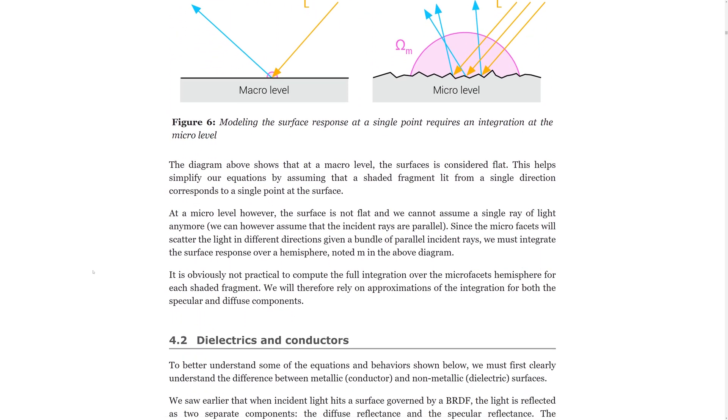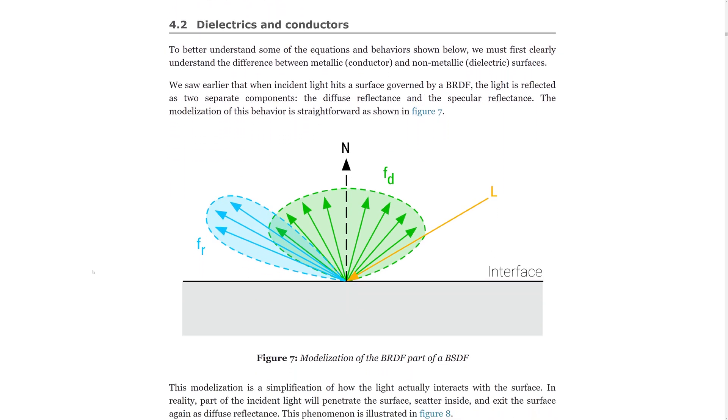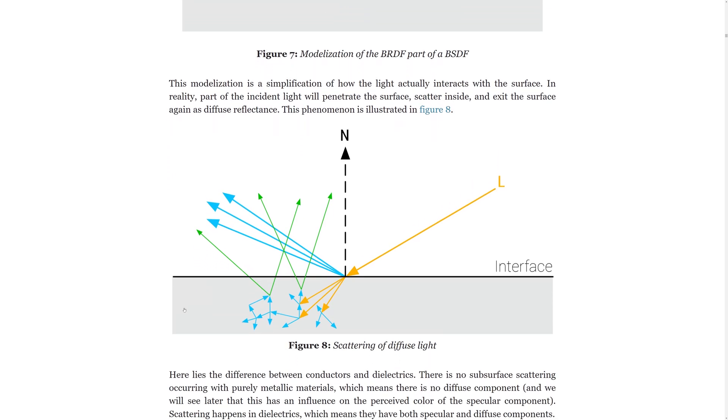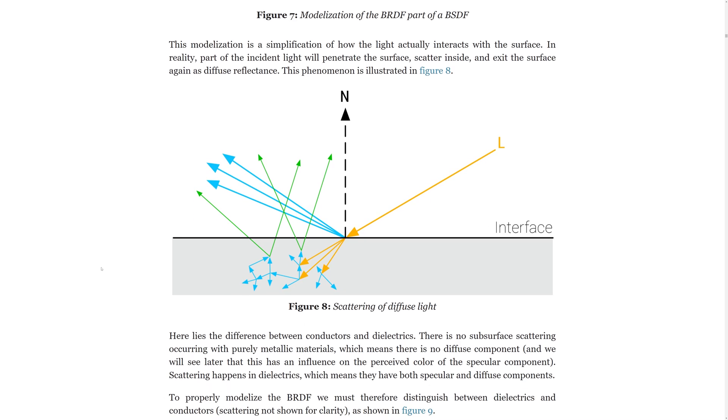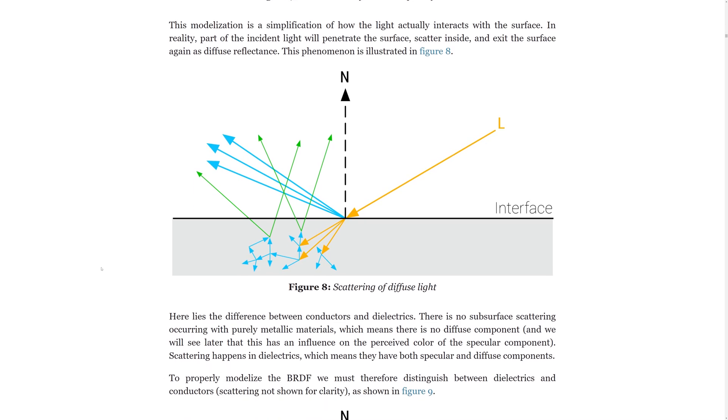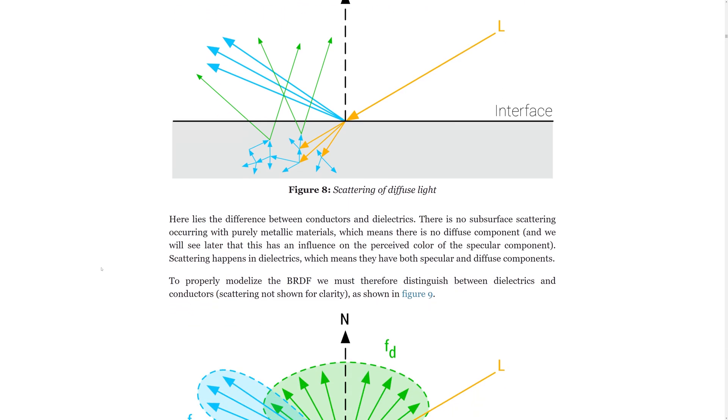Now let's have a closer look at the diffuse part of the BRDF. Diffusion happens when light penetrates below the surface where it's randomly scattered within the volume of the object. Some of this light is absorbed and will not contribute to the output. The remaining light exits the surface again in a random direction. This happens to every object you see around you except for metallic objects.